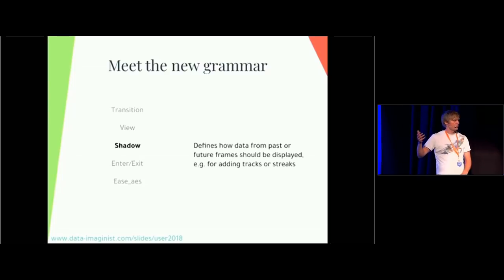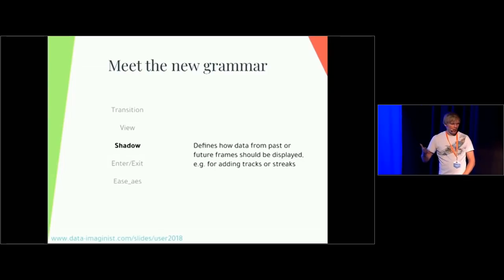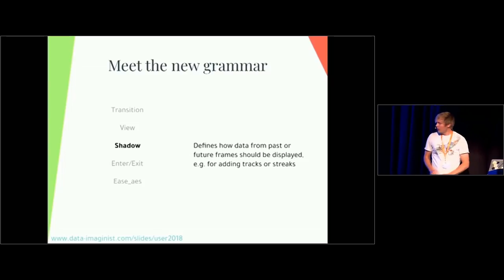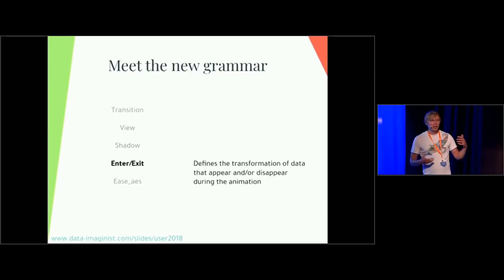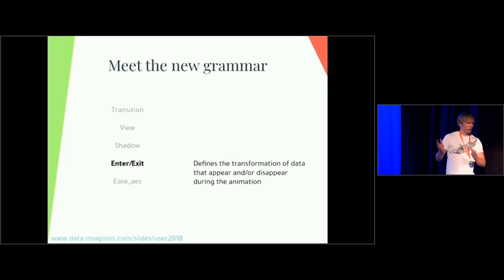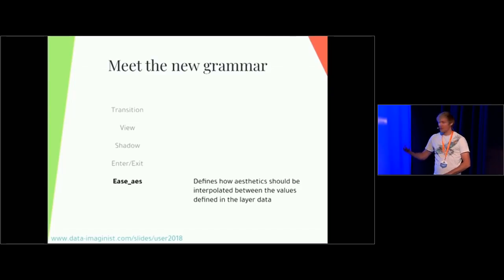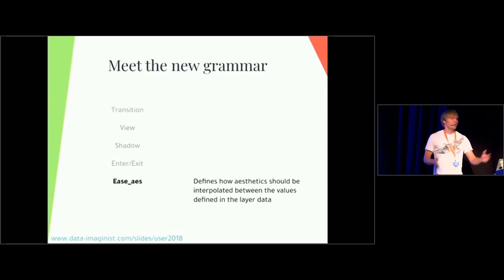Shadow is something new — my idea with shadow is that sometimes we want to take data that doesn't belong in a specific frame and apply it to the frame and plot it as well. Think about old-school Windows where you could put a shadow on your mouse cursor — you could see trails after your cursor — and you can do that with GGAnimate as well. Enter and exit define how data should appear or disappear if it's not part of the different frames we're looking at. The easiest defines how aesthetics should be interpolated, and you don't have to interpolate different aesthetics in the same way — you can have a cubic interpolation of color, a linear interpolation of the X axis, and an elastic interpolation of the Y axis if you so desire.